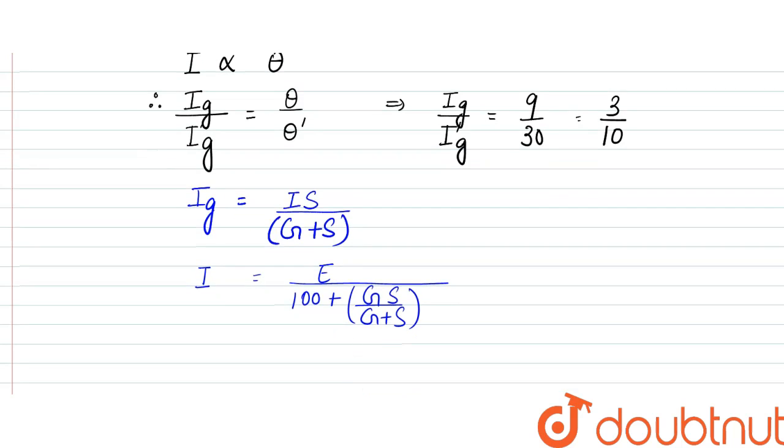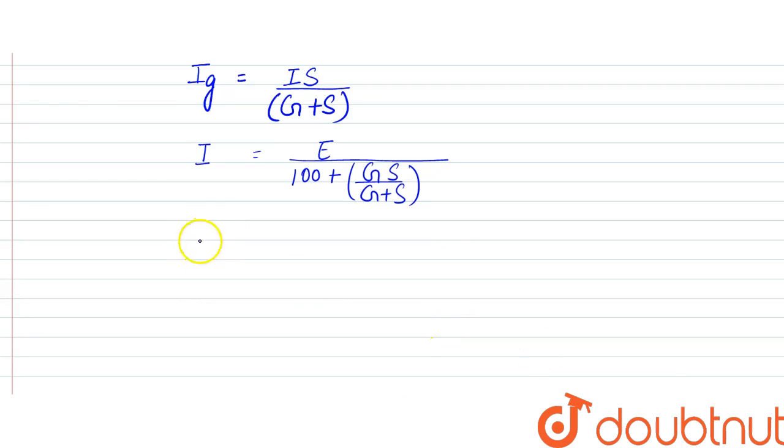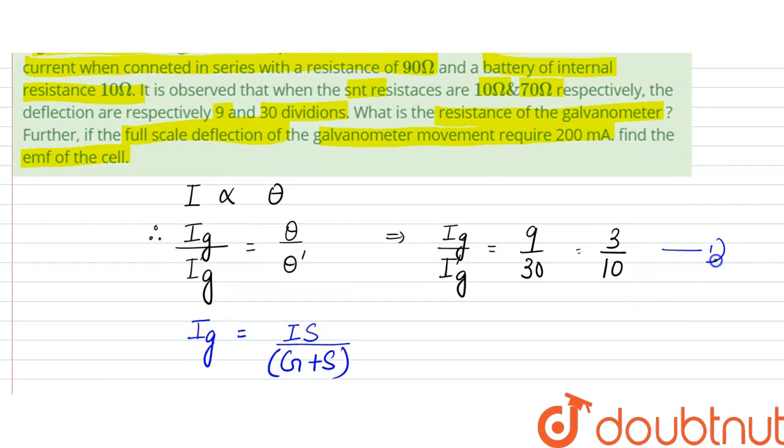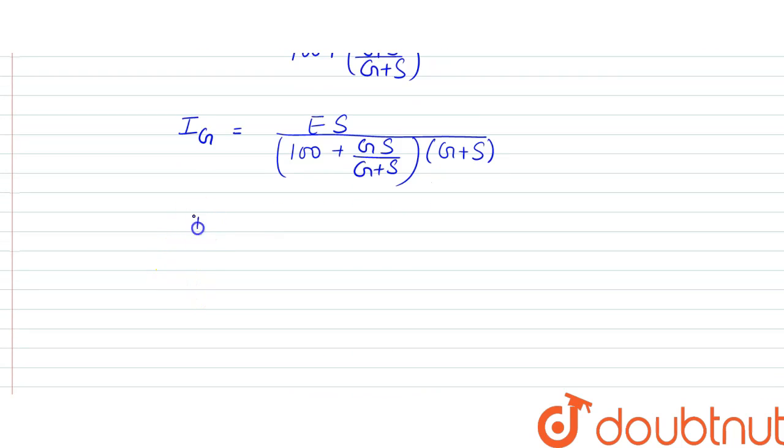From here we can write that Ig would be equal to E times S divided by (100 + GS/(G+S)) times (G+S). From here we get that when you substitute this value in the first equation, what we get is Ig by I'g would be equal to: